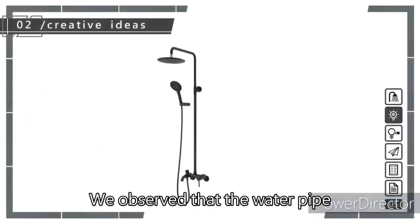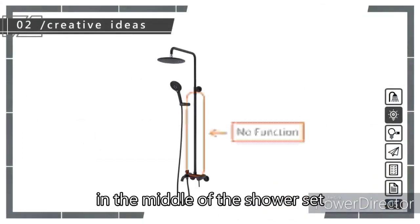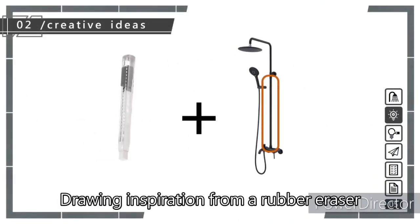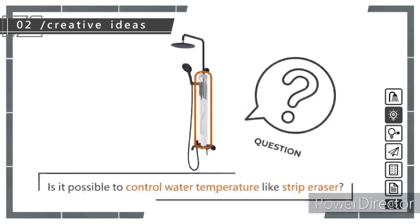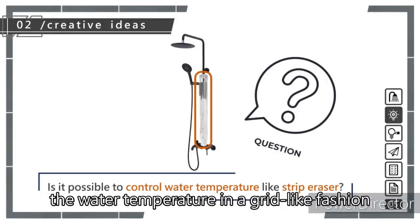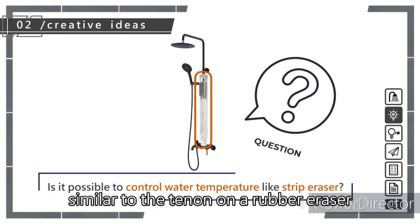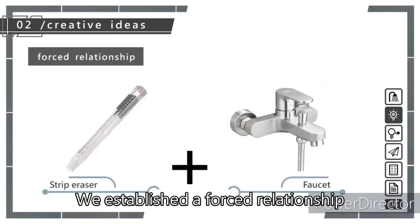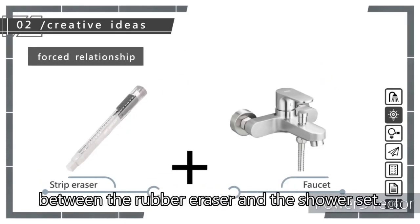Now let me explain further. We observed that the water pipe in the middle of the shower set serves no other purpose. Drawing inspiration from a rubber eraser, we considered if we could control the water temperature in a grid-like fashion, similar to the tenon on a rubber eraser. We established a forced relationship between the rubber eraser and the shower set.